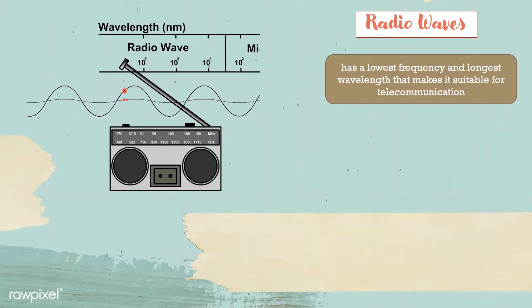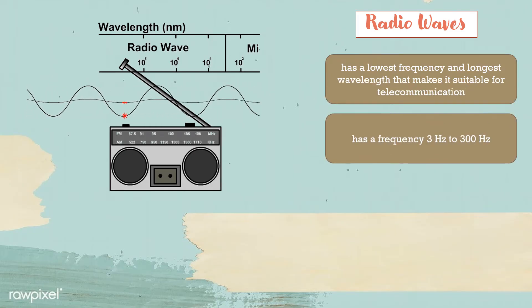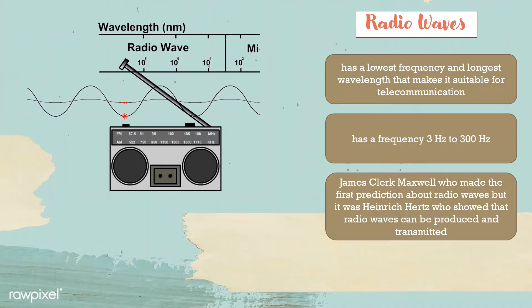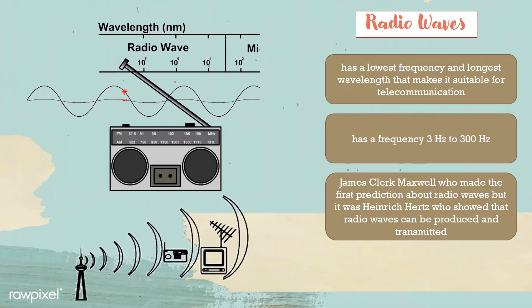The first type of electromagnetic wave is the radio waves. It has a lowest frequency and longest wavelength that makes it suitable for telecommunication. It has a frequency of 3 Hz to 300 Hz. Now, what is Hz? Hz is a number of cycles per second. It means that the frequency of radio waves per second is from 3 Hz to 300 Hz. James Clerk Maxwell made the first prediction about radio waves but it was Heinrich Hertz who showed that radio waves can be produced and transmitted.